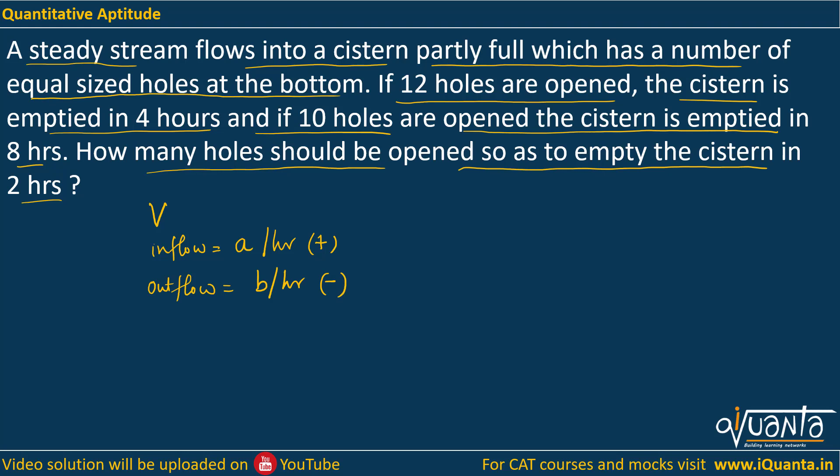When the cistern is being emptied the water coming in and leaving should be the same. V is the volume of liquid that was already present in the cistern because it is partly full. If 12 holes are opened the cistern is emptied in 4 hours, that means the inflow would be working for 4 hours. In 4 hours the inflow will give volume 4a. So this volume V plus 4a is being emptied in 4 hours by 12 holes working for 4 hours each, and the outflow of every hole is b units per hour, so V plus 4a equals 48b. This will be the first equation.